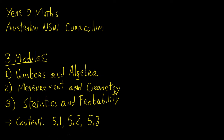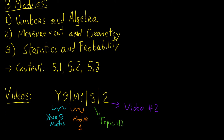I will let you know which content is relevant to which in the individual videos as we go along. To make things easier when finding these videos, I have devised a little code to help you find out whether the video you're watching corresponds to the correct sequence. The code is composed of four terms. The first term is a 'Y' followed by a number specifying the year — for example, Y10 for year 10 mathematics. The second term is an 'M' followed by a number corresponding to the module: M1 is numbers and algebra, M2 is geometry, and M3 is statistics and probability.